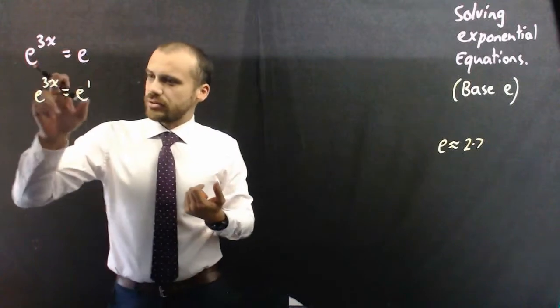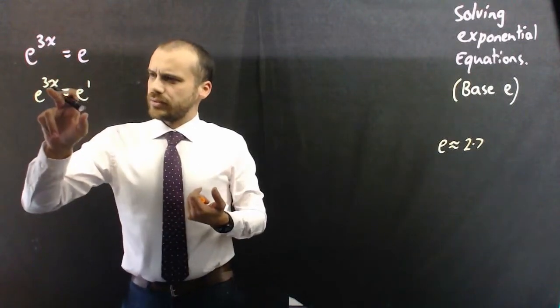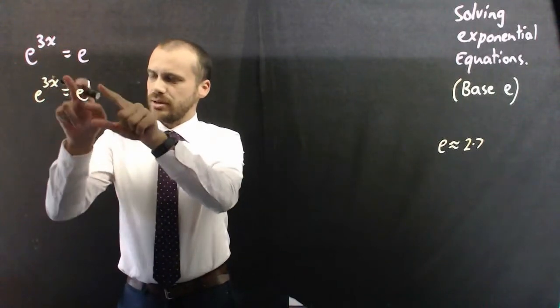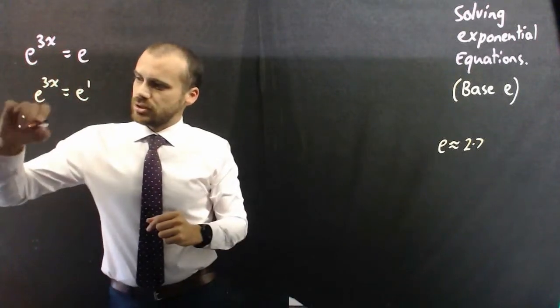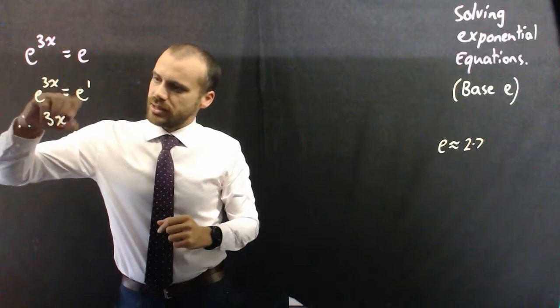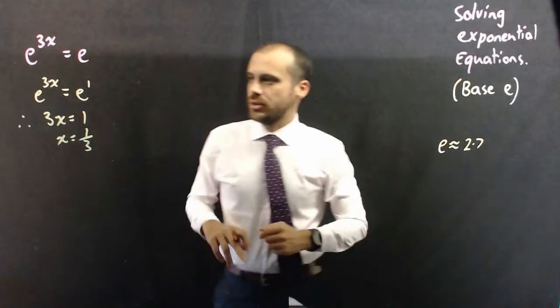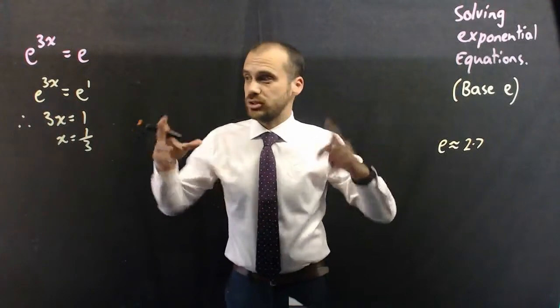Now, if e to the 3x equals e to the 1, then 3x must equal 1. Because we're just raising the same thing to a power, and they're equaling each other. So those powers must be the same. Therefore 3x equals 1 and x equals 1 third. So there's your most basic how to solve exponential equation.